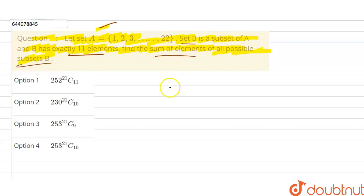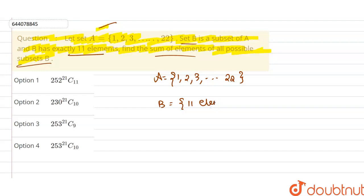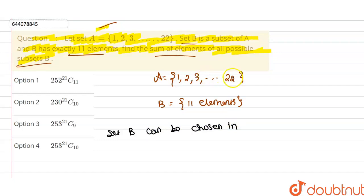Set A contains elements 1, 2, 3 up to 22, and set B contains 11 elements. We don't know what those 11 elements are. Set B can be chosen from these 22 elements — we choose 11 — so that's C(22,11) ways.